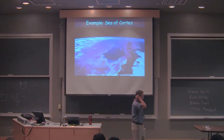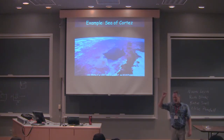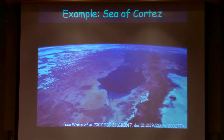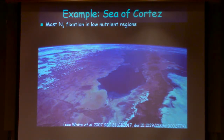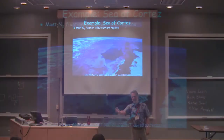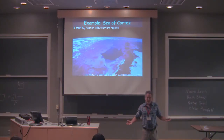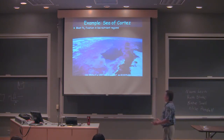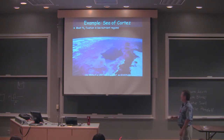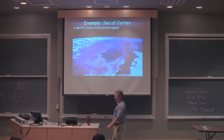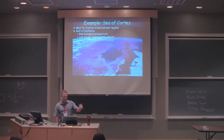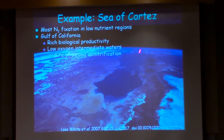One example that gives insight into longer-term oceanic controls on nitrogen fixation is nitrogen fixation in the Sea of Cortez — one of my favorite places to work because the fishing is good. When we think about nitrogen fixation, we think about regions where there's not a lot of nitrate present — it's energetic, it takes a lot of energy, but it's a way of growth. Most recognition of nitrogen fixation has been in oligotrophic regions. But the Gulf of California is different — it's really quite productive with rich biological productivity and even low oxygen in intermediate waters.